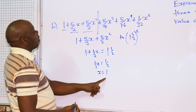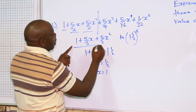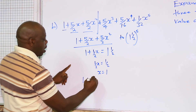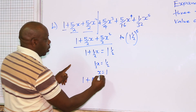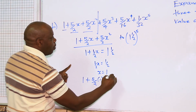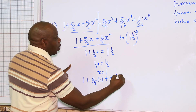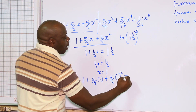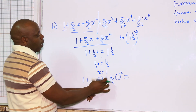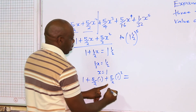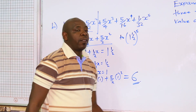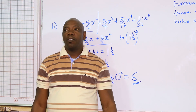With x = 1, substitute into the first three terms: 1 + 5/2(1) + 5/2(1²) = 1 + 5/2 + 5/2 = 6. And that is the answer. Thank you so much.